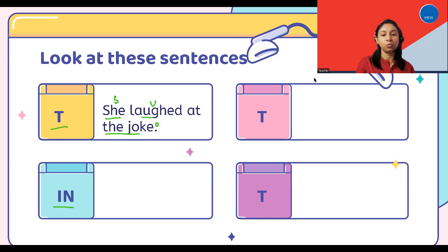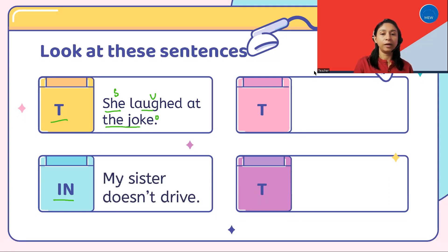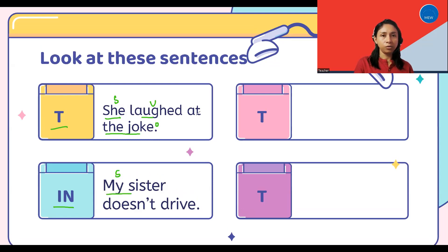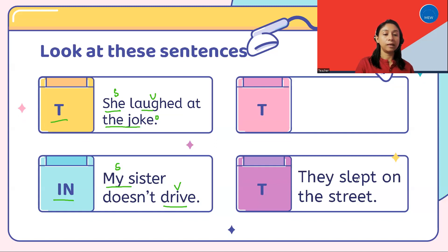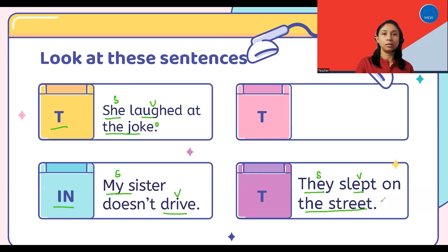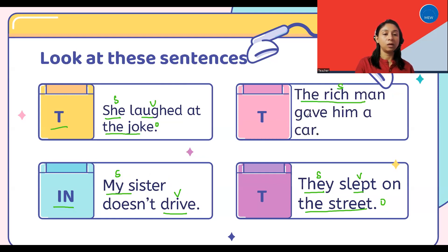Moving on to the next one: My sister doesn't drive. In this sentence, my sister is the subject, and drive is the verb — we'll write V for verb. Moving on to the third one: They slept on the street. Here, they is the subject, slept is the verb, and the street is the object. And the fourth sentence: The rich man gave him a car. The rich man is the subject, give is the verb, and car is the object.